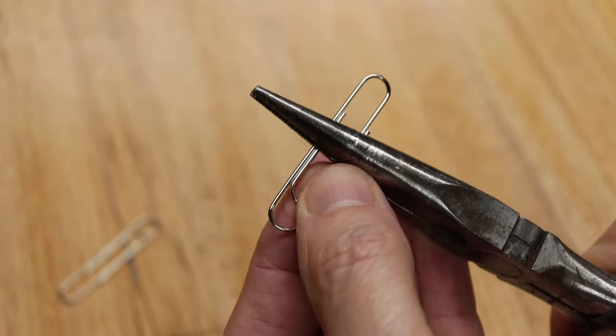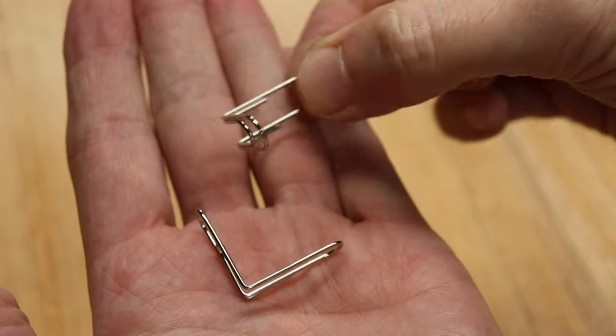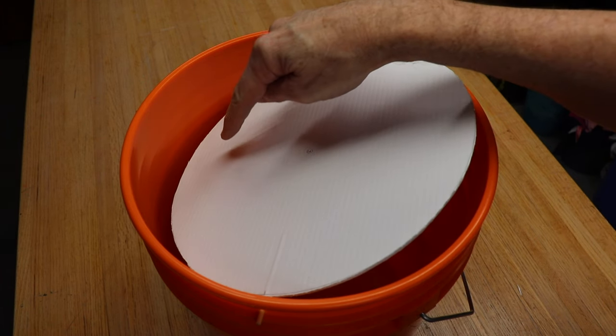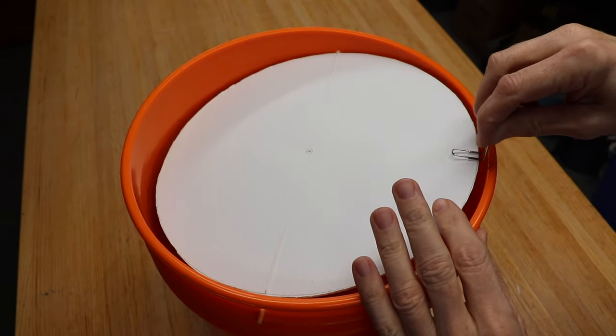Now take two of the two inch paper clips and bend them at 90 degrees right in the center. So this side is the heavier side so we want to put a paper clip on this side so that the lid stays nice and level.